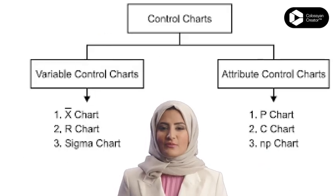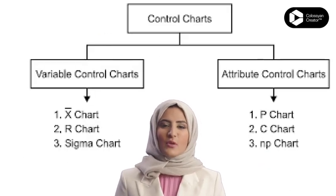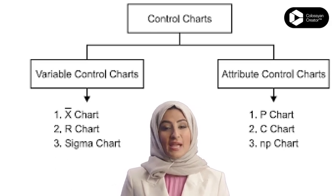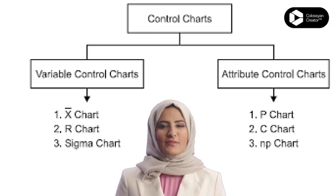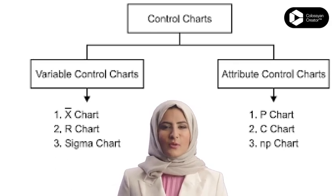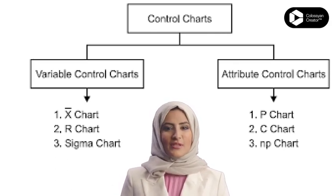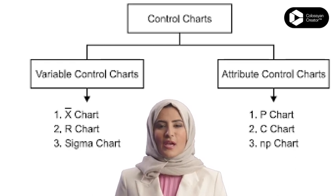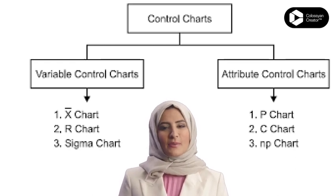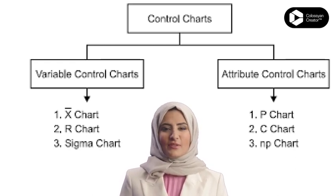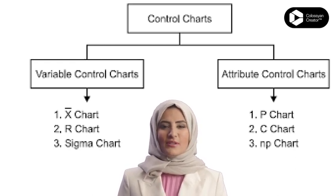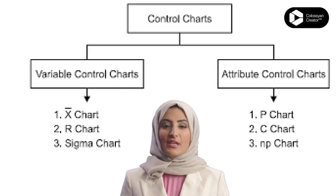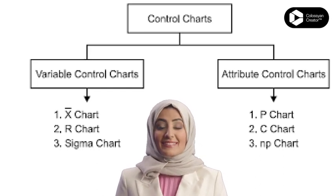Types of control charts: variable or measurement charts, and attribute charts. Variable or measurement charts include the X-bar chart and R-bar chart. Attribute control charts include the P chart, C chart, and NP chart.